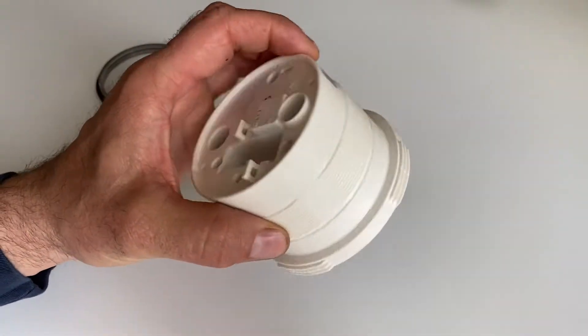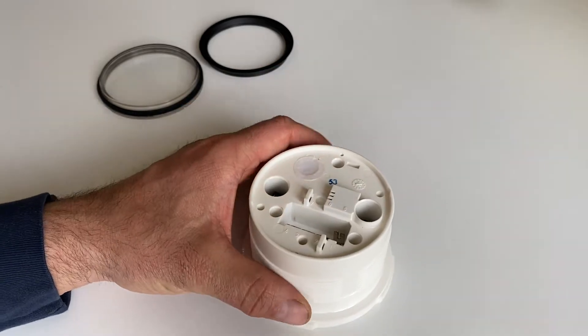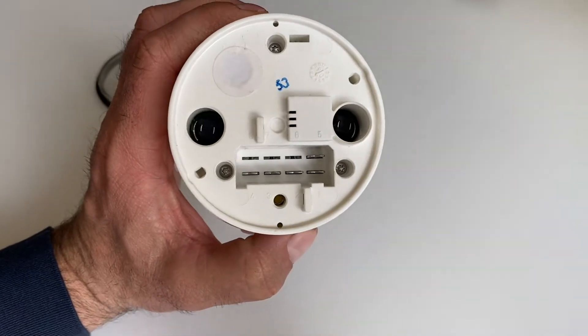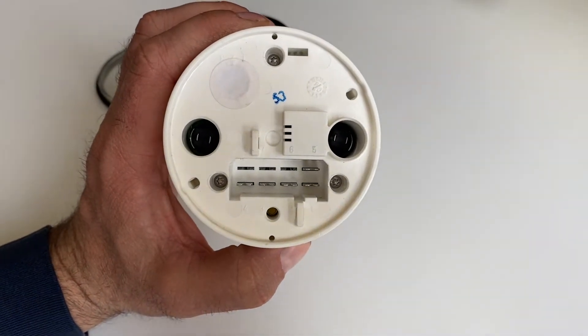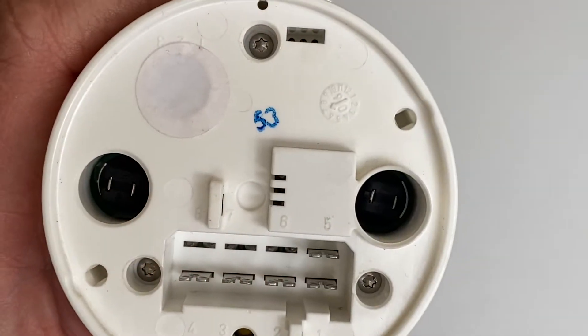Now flip the tach over upside down and you're gonna remove the torque screws. You can see there's three of them.